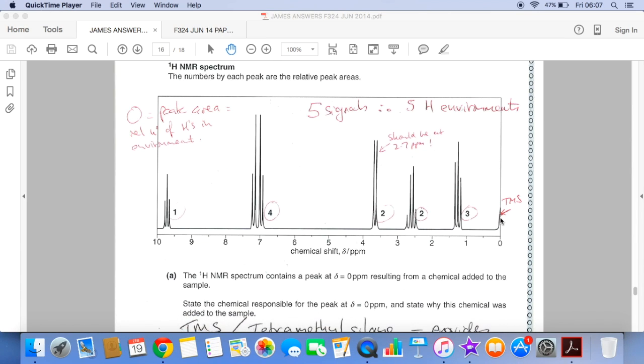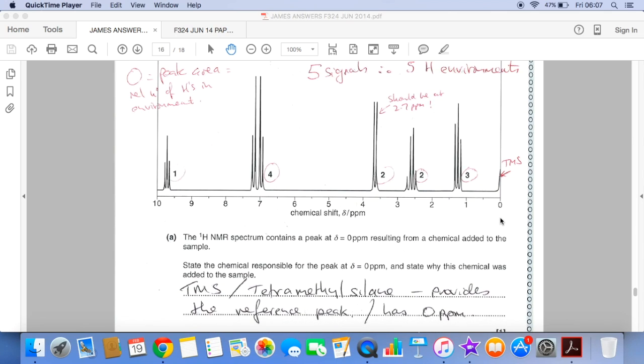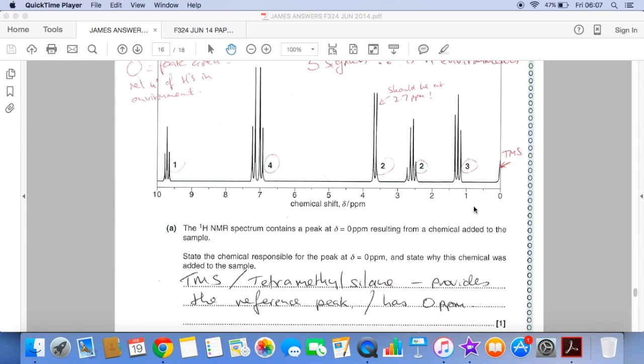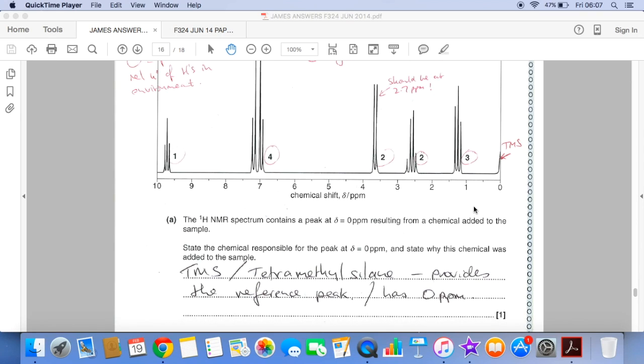And straight away you can see I've actually answered the first question. What is the chemical causing this peak at zero? It's TMS, which stands for tetramethylsilane. Why do they use it? Because it provides this reference peak. Or you could say it has a shift value of zero ppm.